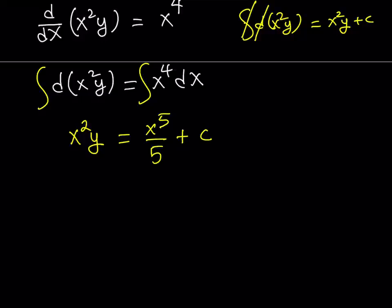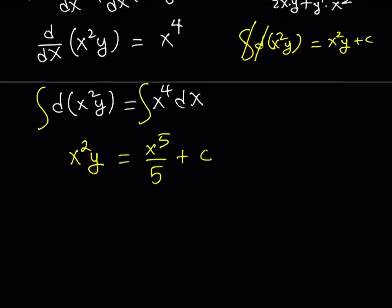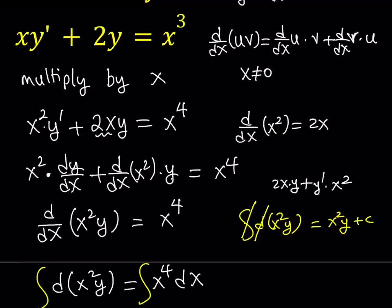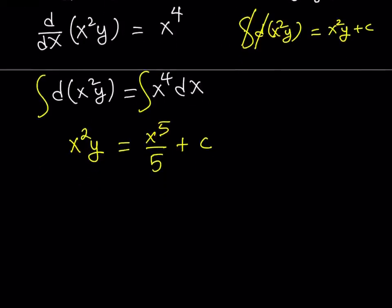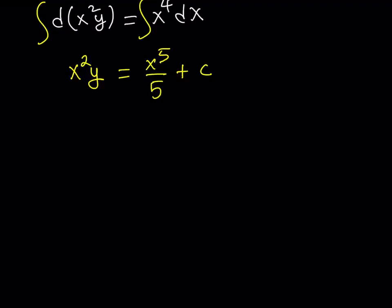Our goal is to solve for y. So we divide both sides by x squared — and remember, x does not equal zero, so this is allowed. From here we get y equals x to the fifth divided by x squared, which is x to the third power divided by five, plus c divided by x squared. And this gives us the general solution.